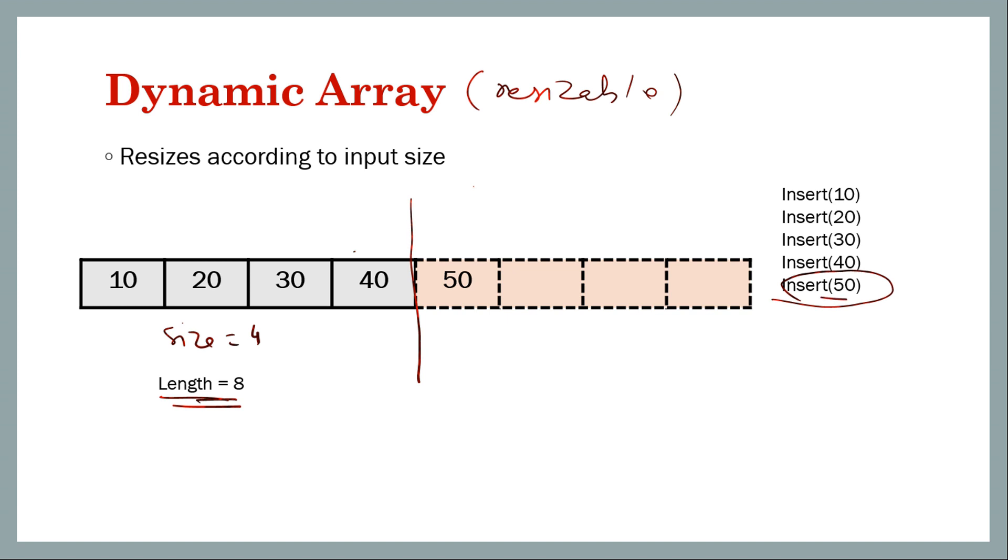So internally what we can do, or what any typical implementation would do, it would create a new array of double the size, in this case length of 8, insert this 50 here and also copy the 4 elements. So this is not the original array, original array was here. And all the elements are copied to the new array and then the last one is inserted. And now the size is 5 and actual length or the capacity is 8. So I hope you understand what is a dynamic array and why is it useful. It solves the problem of that static thing, that is once declared it cannot be resized.